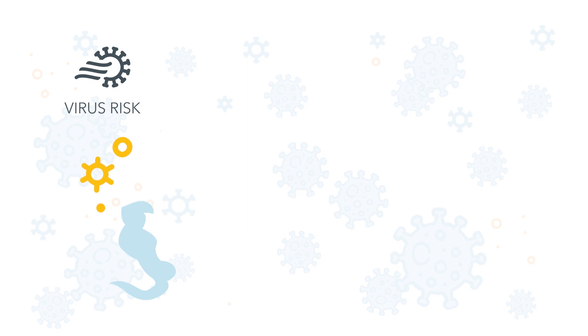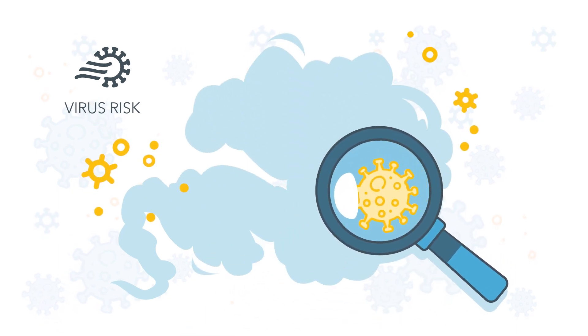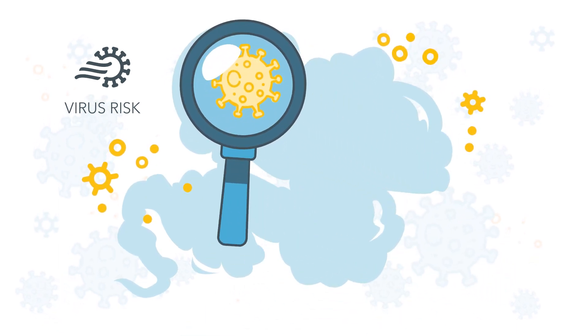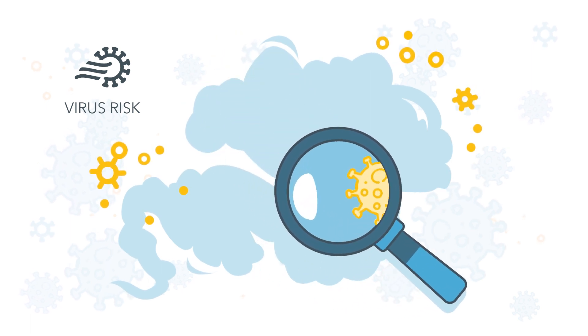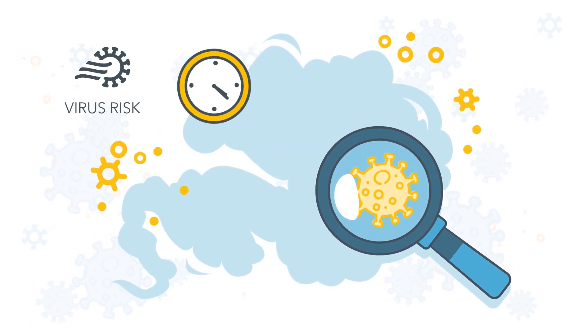The AirThings Virus Risk Indicator looks at airborne microscopic droplets, or aerosols, which can travel quite far and can hang in the air for extended periods of time.